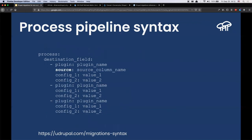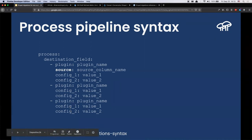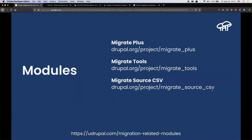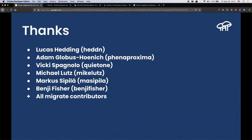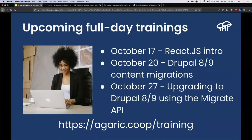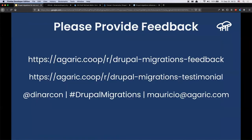In addition to the syntax, there is also something called a process pipeline. You might need to apply more than one process plugin for one specific operation. You put them in an array, one after the other. Only the first one has the source configuration reading from your CSV column. Every other plugin in the pipeline uses the output of the previous plugin as its input, and whatever the last plugin produces is the final value assigned to the destination field. Those are some examples of modules I use. Many thanks to all the Migrate maintainers and contributors who have helped me along the way.